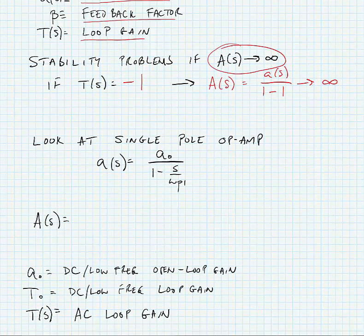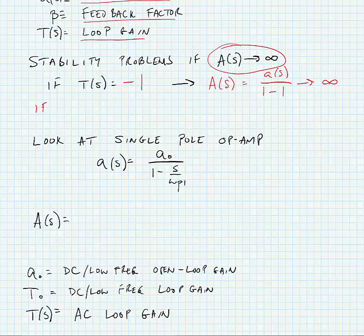What we're saying is if the magnitude of a of s times beta is greater than or equal to 1, when the angle of a of s times beta is equal to minus 180 degrees, then we have potential for instability.